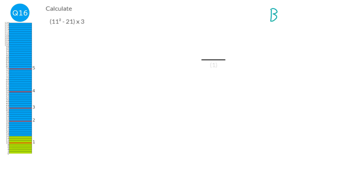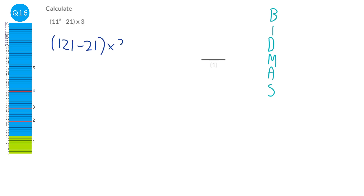We need to remember BIDMAS. We've got brackets — 11 squared minus 21 — so we look at that first. Inside the brackets we have an index: 11 squared is 121. Now we're still in the bracket: 121 minus 21 is 100. We have no more brackets, no divisions, but we do have a multiplication. So it's going to be 300. That's our answer.